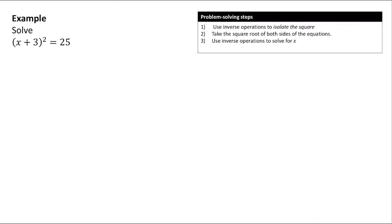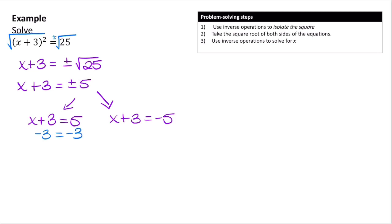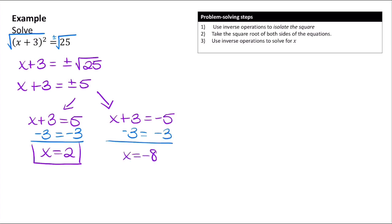Now let's try x minus 3 squared equals 25. The square term is already isolated, so we take the square root of both sides: x minus 3 equals plus or minus the square root of 25. The square root of 25 is 5, so x minus 3 equals plus or minus 5. We separate this into two equations: x plus 3 equals 5, giving x equals 2; and x minus 3 equals negative 5, giving x equals negative 8. Those are our two solutions.